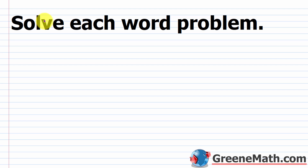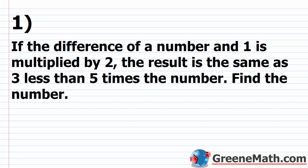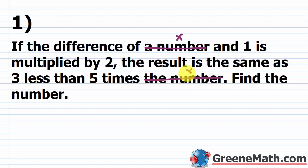Let's take a look at our practice test. We're told to solve each word problem. For the first problem: if the difference of a number — whenever I see 'a number' or 'the number' I'm going to scratch that out and put a variable, you could use x, y, z, whatever you want. So if the difference of x and one is multiplied by two, the result is the same as three less than five times x. Find the number.